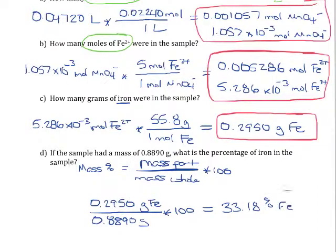Again, four significant figures. So what we did here in this problem is we took something where I maybe could have just asked you what's the percent of iron in the sample, and we broke it down into the four individual steps in order to figure out the answer to that. Now you should be able to put all these steps together into one big calculation, because on a test I might not ask them as individual steps.